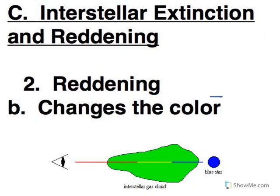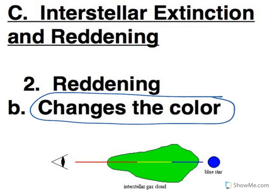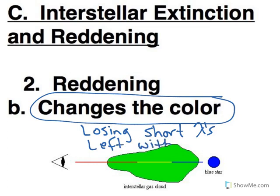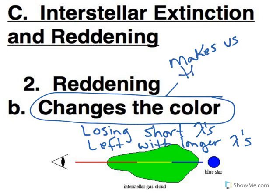So here we're looking at the effect on color. We're losing the short wavelengths and left with the longer wavelengths. And of course longer wavelengths are associated with cooler temperatures. So it makes us think an object is cooler than it actually is.